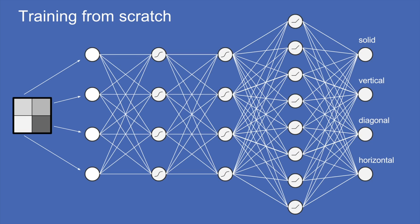To train, we start with a fully connected network where we don't know what any of the weights should be, so we assign them all random values — a completely arbitrary random neural network. We put in an input that we know the answer to (solid, vertical, diagonal, or horizontal), calculate the error, then using back propagation go through and adjust all of those weights a tiny bit in the right direction. We repeat that again and again — for many thousands or even millions of inputs — and eventually all of those weights will roll down that many-dimensional valley to a nice low spot where it performs really well.